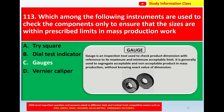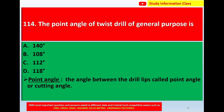A gauge is an inspection tool used to check product dimensions with reference to its maximum and minimum acceptable limits. It is generally used to segregate acceptable and non-acceptable products in mass production without knowing the exact value of the dimension. So for question number 113, the correct answer is Option C, gauges.